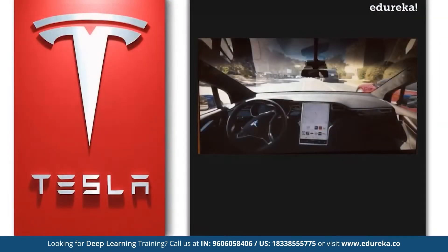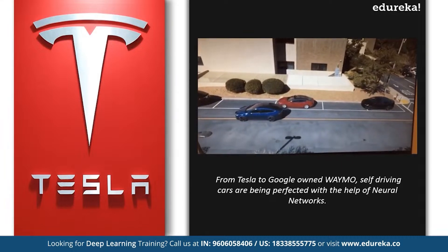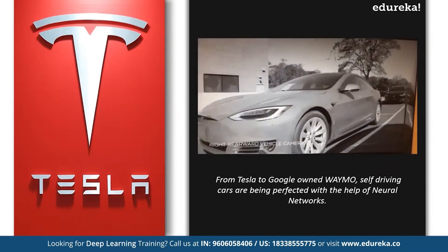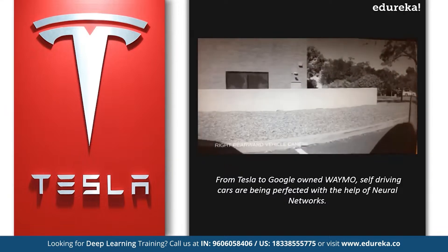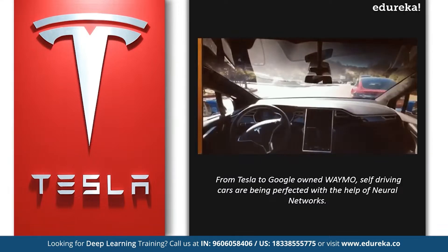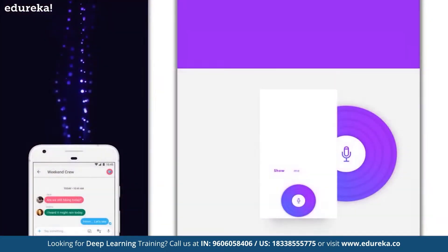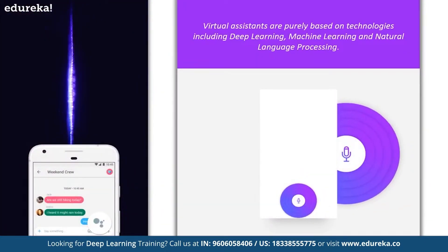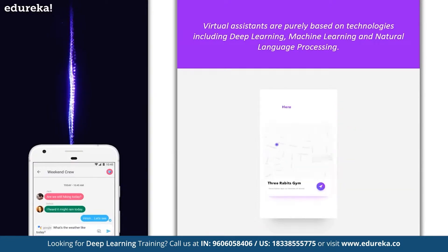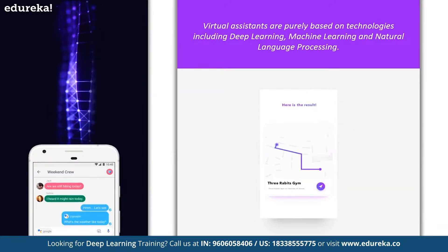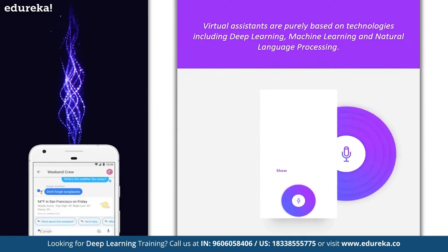Deep learning has played a huge role in the field of self-driving cars. From Tesla to Google-owned Waymo, self-driving cars are being perfected with the help of neural networks. Then of course, we have virtual assistants like Siri, Alexa, and Cortana, that can literally read your mind. These assistants are purely based on technologies including deep learning, machine learning, and natural language processing.